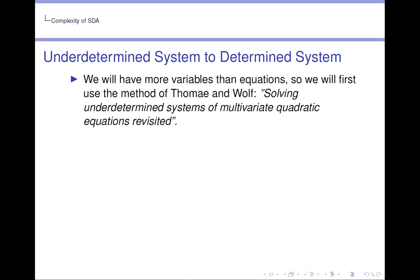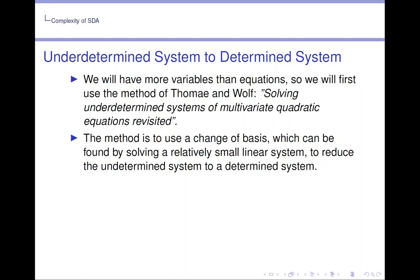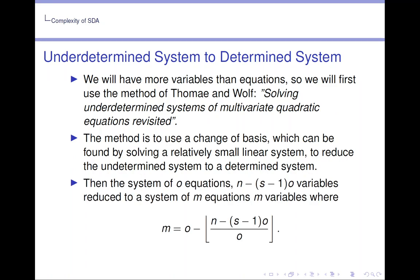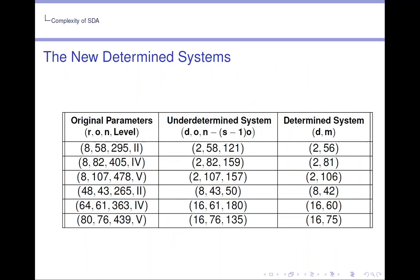We will have more variables than equations, so we will first use the method of Thomae-Wolf, which can be found in the following paper, Solving Underdetermined Systems of Multivariate Quadratic Equations Revisited. The method is to use a change of basis, which can be found by solving a relatively small linear system, to reduce the underdetermined system to a determined system. Then the system of o equations and n minus (s minus 1) times o variables is reduced to a system of m equations and m variables, where m equals o minus the floor of n minus (s minus 1) times o divided by o. Now after applying this method we generally lose one or two equations, and this is in the following table.